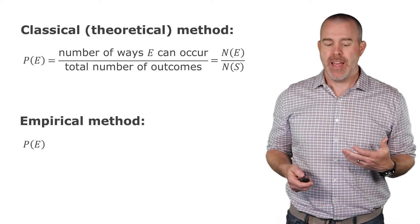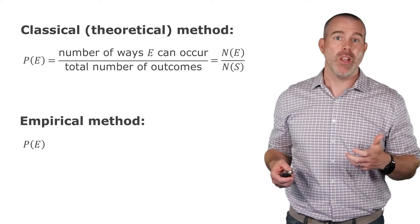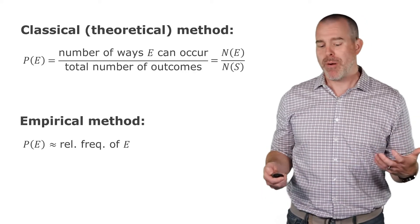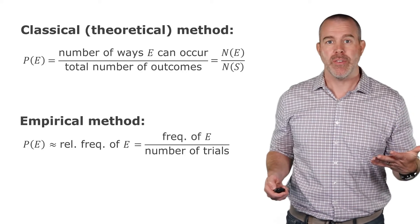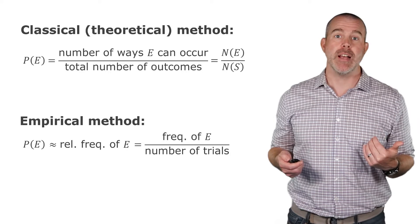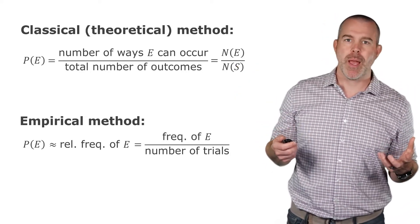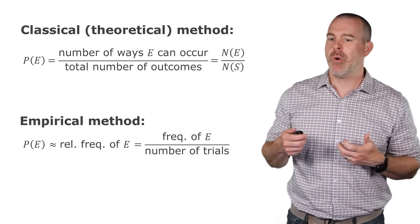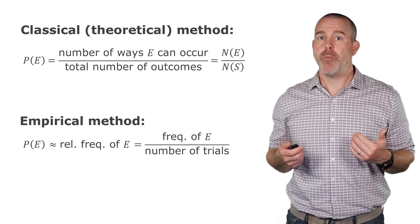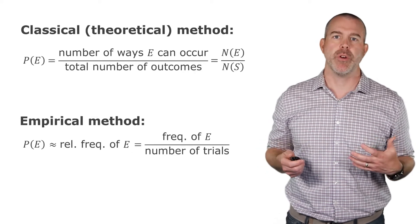For example, if I had a die that I wasn't sure was fair, I could just roll it a thousand times and count all of those up. The empirical probability is the relative frequency of an event — the frequency over the total number of trials. Classical probability works when you know something about the deck of cards, a flip of a coin, or a die. Empirical probability is just looking at data from tests or trials.